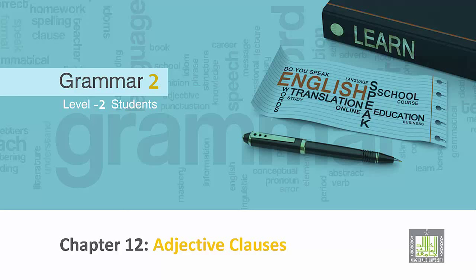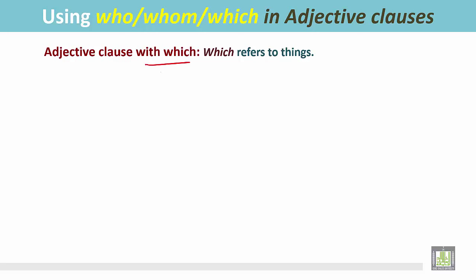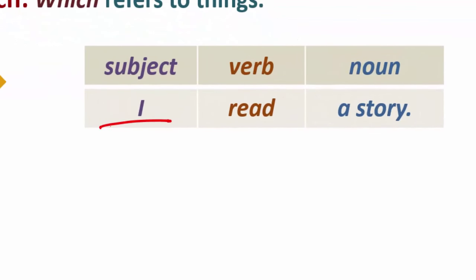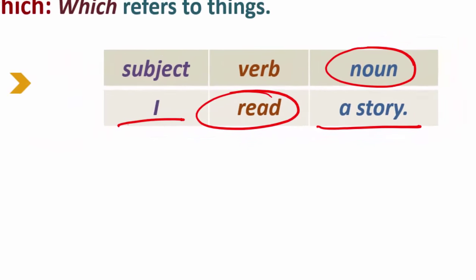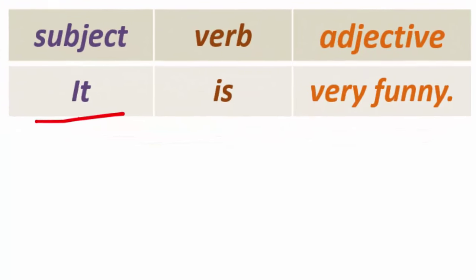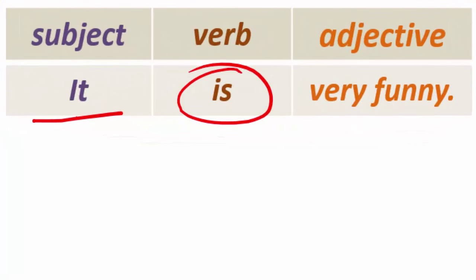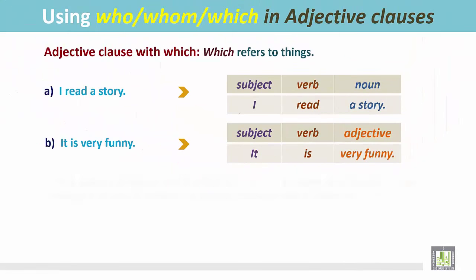Grammar 2 for level 2 students, Chapter 12: Adjective Clauses using who, which, and whom. Adjective clauses with 'which' refer to things. Consider the sentence 'I read a story.' Here, 'I' is the subject, 'read' is the verb, and 'a story' is the noun. Another sentence: 'It is very funny.' Here, 'it' is the subject, 'is' is the verb, and 'very funny' is the adjective. 'It' refers to 'a story.'